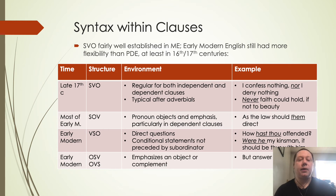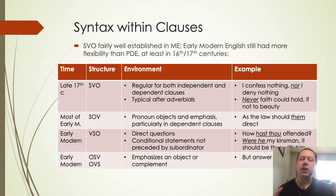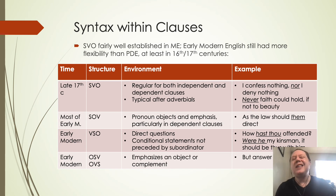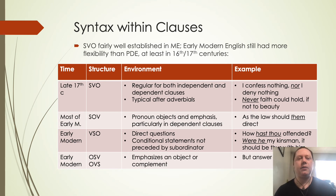Some verb fronting still occurs — 'how hast thou offended,' 'were he my kinsman' — these are things you might still see in direct questions or in conditional statements, reflecting the subjunctive concept which still exists in present-day English but is falling away. This is also still found in Early Modern English and might occasionally be heard in present-day English, but not nearly as much as during this time period. Objects can also be fronted for emphasis.